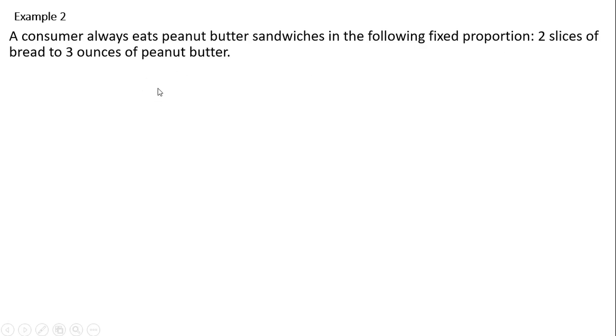So I'm going to construct the ratio. Slices of bread to peanut butter is two to three. We're going to solve this ratio now for S, so just multiplying everything through by P. We get this result where S is slices of bread and P ounces of peanut butter.